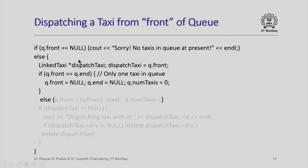How do we dispatch a taxi from the front of the queue? If there are no taxis, q.front will be null and we say sorry, no taxis in the queue at present, and go back to accept the next command. Otherwise we copy q.front into a variable dispatch_taxi of type pointer to link_taxi. If dispatch_taxi was the only taxi in the queue, meaning q.front equals q.end, then after dispatching it the queue becomes empty, so we set both q.front and q.end to null and the number of taxis to 0.